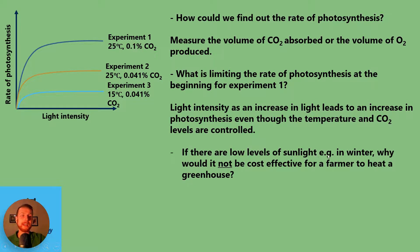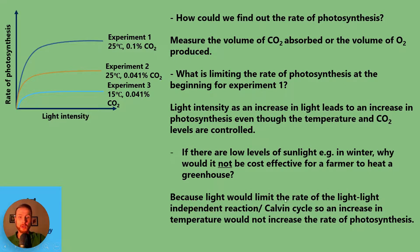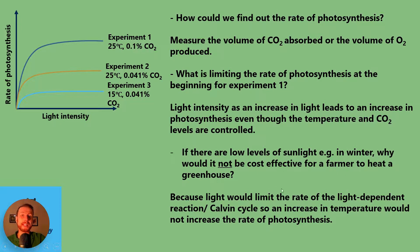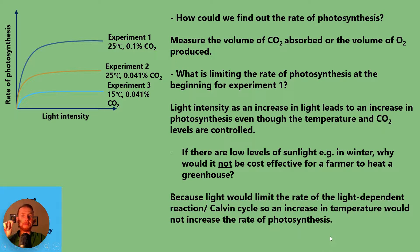Answer three: because light would limit the rate of the light-dependent reaction. Without the light-dependent reaction, we don't have ATP and NADPH being formed. That limits the Calvin cycle, so an increase in temperature would not increase the rate of photosynthesis, because there simply wouldn't be enough reduced NADP for the reduction of GP to TP, nor ATP for TP back to RUBP.